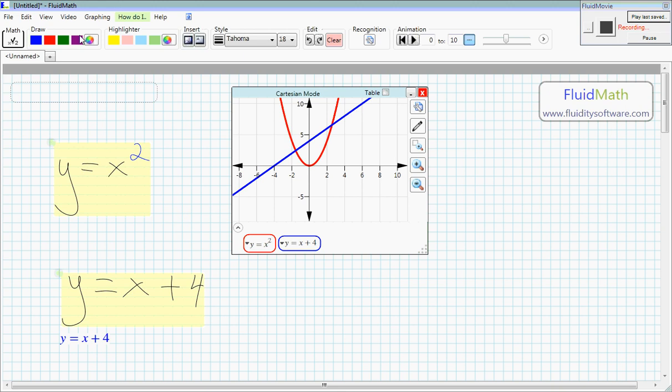So up here on top there's a section of pen palettes or pen colors. And you can click on one of them like the blue one here. And the next stroke you write will be ink but not recognized as math.